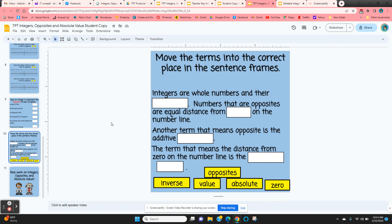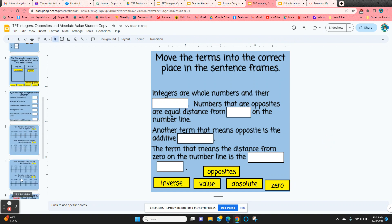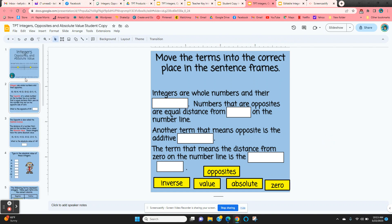And then the final slide has some terms they need to put into the correct place in the sentence frames. And again, just click and hold and then they can move these into the correct place. So that is a digital lesson on opposites and absolute value.